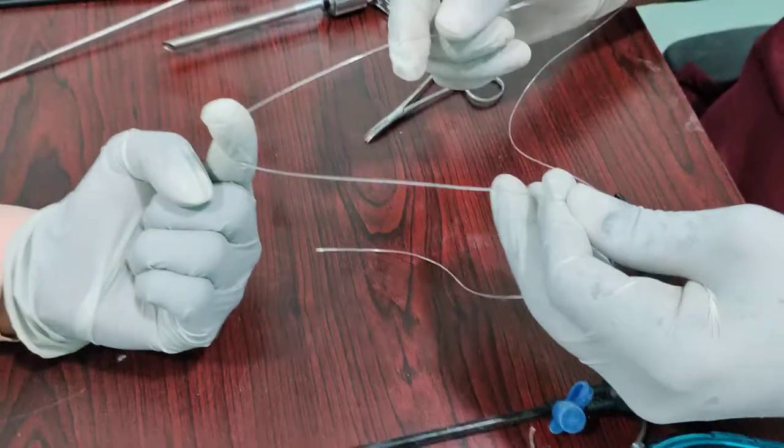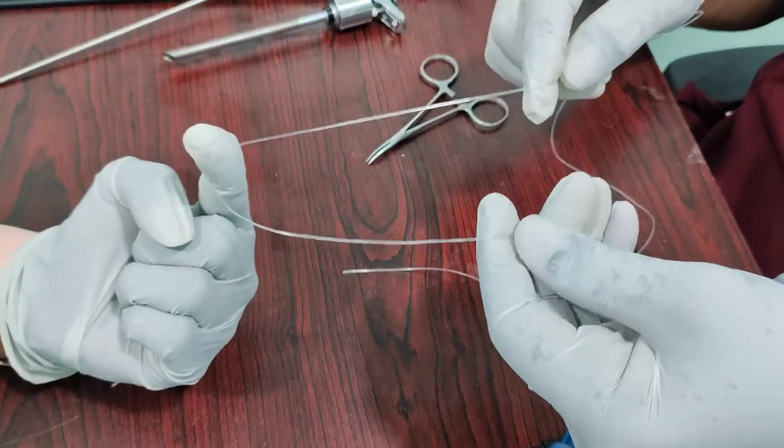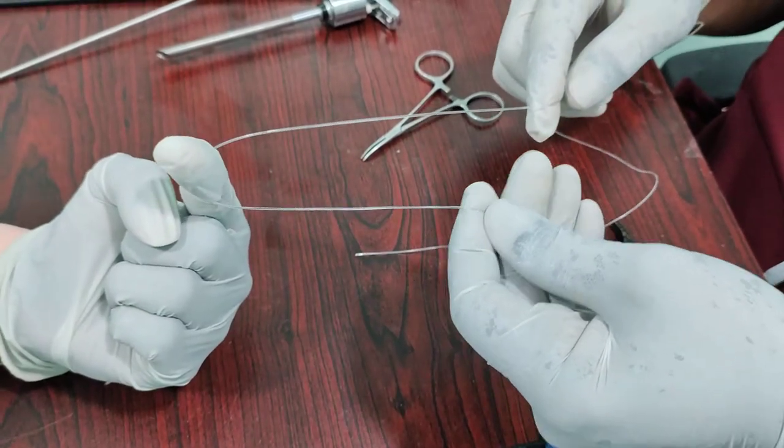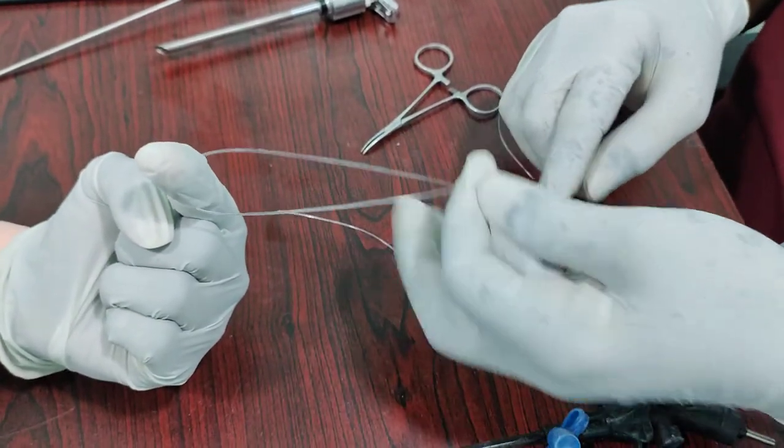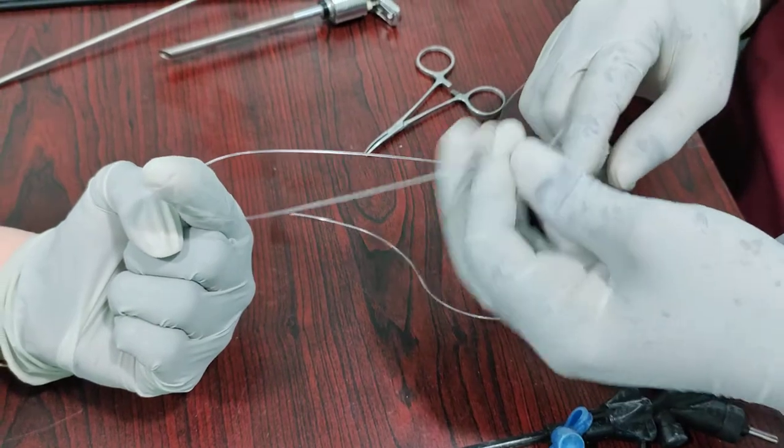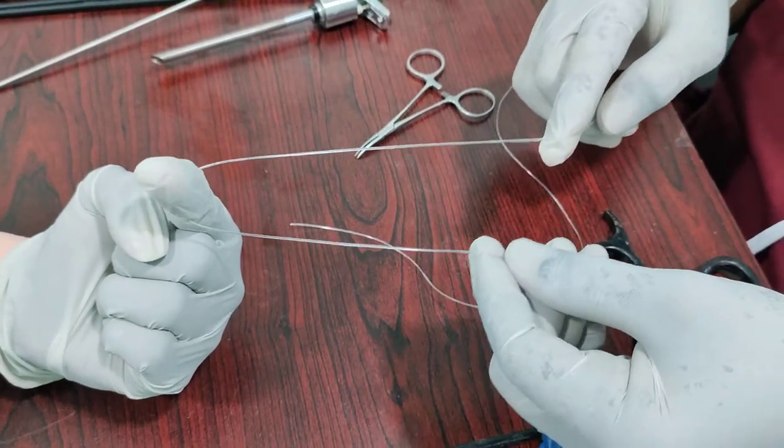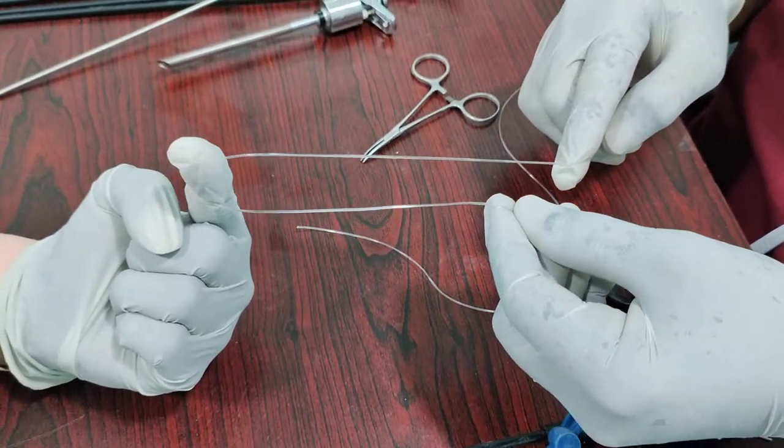So here, I am demonstrating an extracorporeal knot, Melder's knot, which is a modified rodder's knot, for the stronger approximation. The formula for this is 2-3-2,